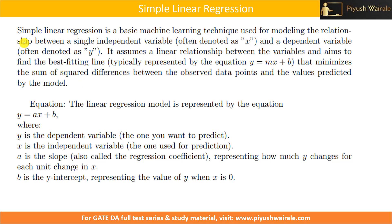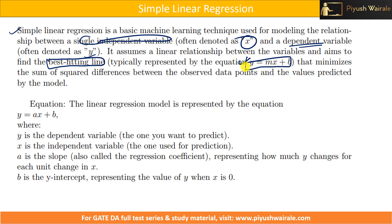Simple linear regression is a basic machine learning technique used for modeling the relationship between a single independent variable x and a dependent variable y. It assumes a linear relationship between the variables and aims to find the best fitting line, typically represented by y equals to mx plus b, that minimizes the sum of squared differences between the observed data points and the values predicted by the model.